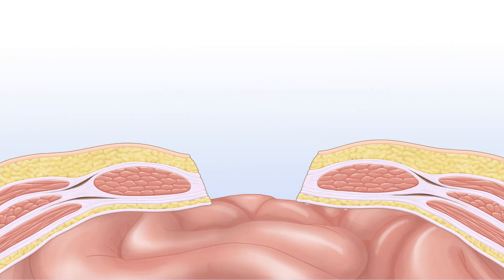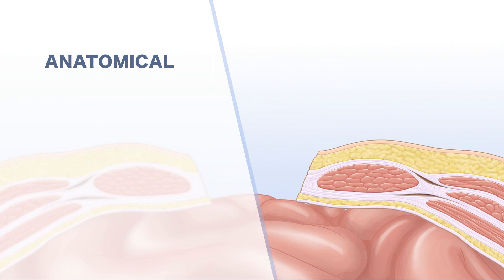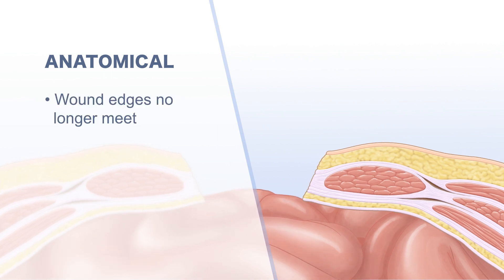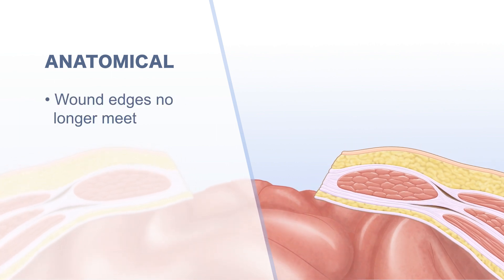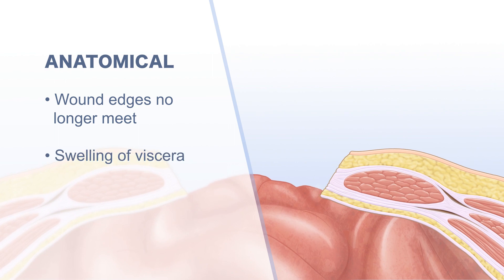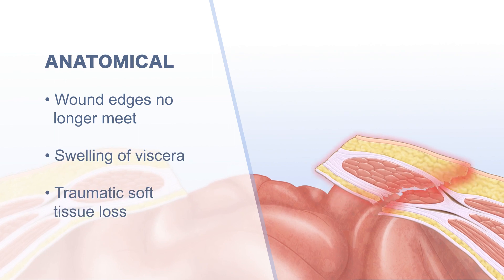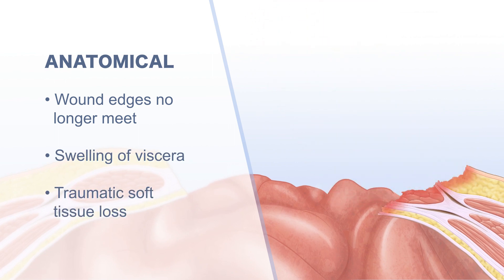The laparotomy incision creates anatomical considerations that affect post-operative treatment. Anatomical reasons for maintaining the open abdomen include the wound edge no longer meeting due to edematous swelling of the viscera or traumatic soft tissue loss of the abdominal wall.